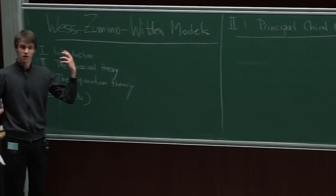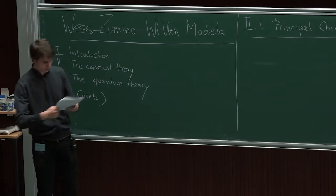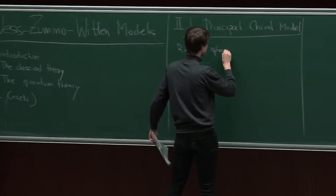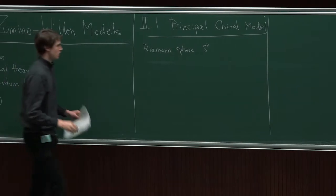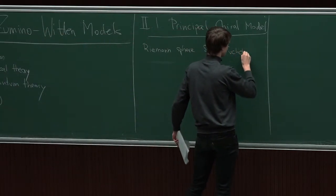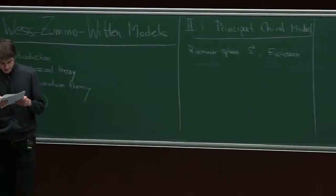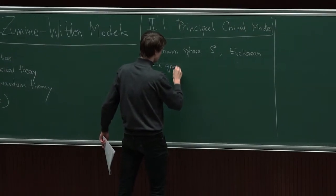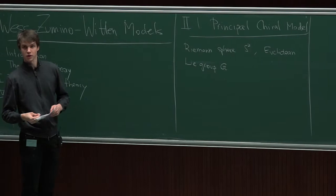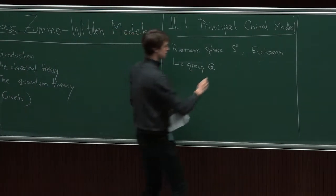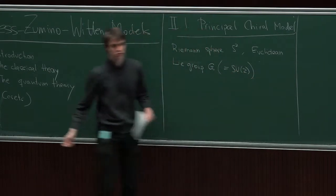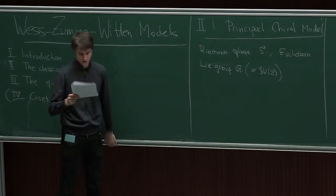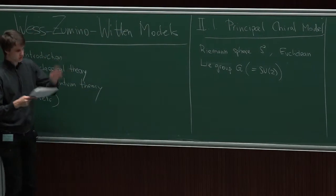Wess-Zumino-Witten models are theories where you have fields which map into a Lie group. To fix some conventions, I will consider the theory only on the Riemann sphere S². Everything I do is Euclidean, so I can use complex analysis. I will need some Lie group, always denoted G. If you don't like abstract Lie groups, just think of SU(2). For technical reasons, I assume it to be compact and simple.